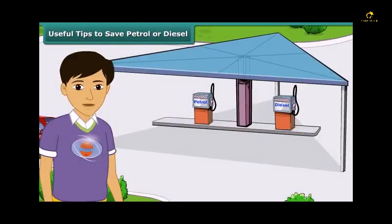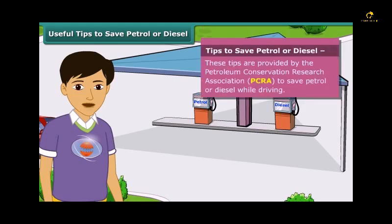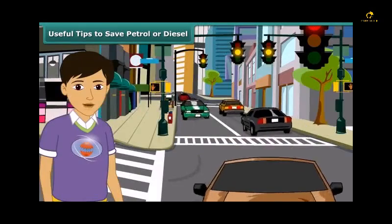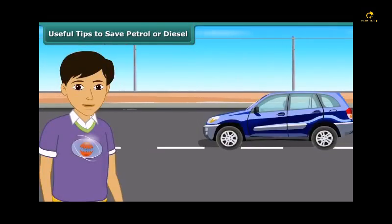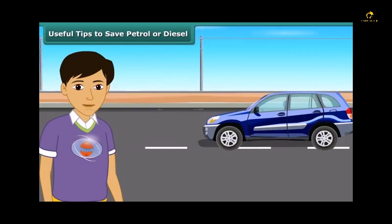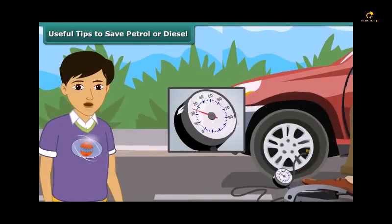Petrol and diesel are exhaustible resources — the amount of them in nature is limited and will deplete one day. It is important to use these resources carefully. Here are a few useful tips as advised by the Petroleum Conservation Research Association (PCRA): 1. Switch off the engine at traffic lights or traffic jams. 2. Drive at a constant and moderate speed as far as possible. 3. Ensure regular maintenance of the vehicle and correct air pressure in tires.